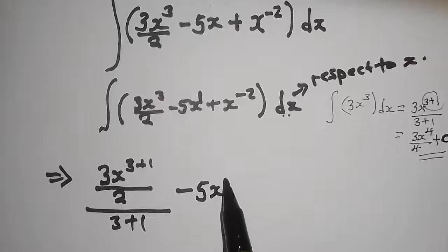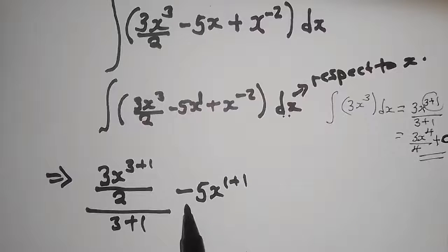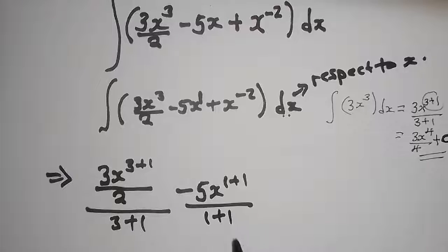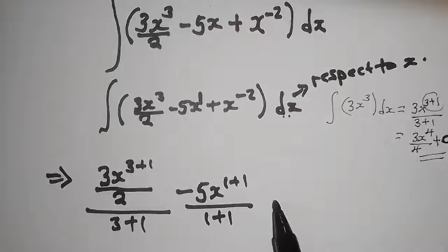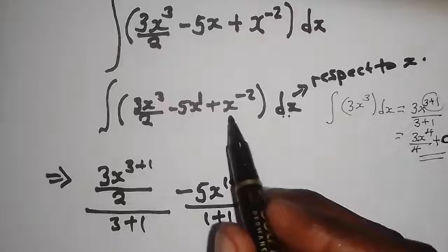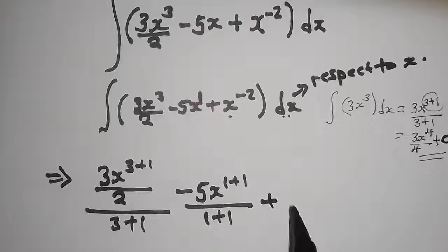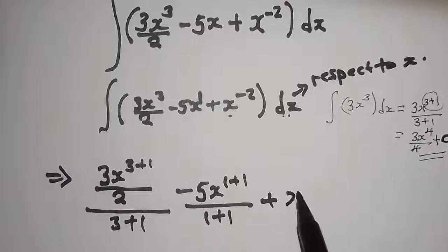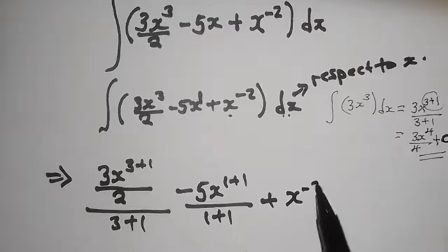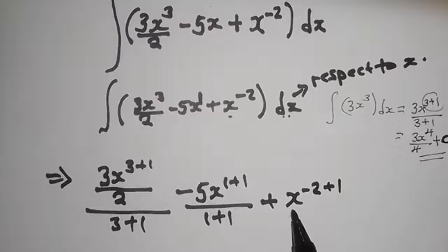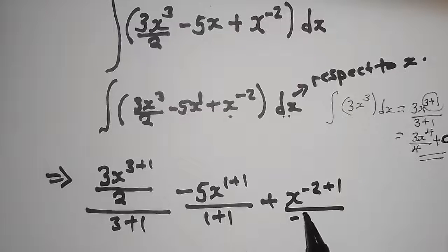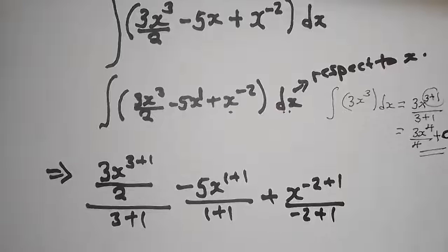For the third term, x to the power negative 2, we apply the same rule: x to the power negative 2 plus 1, divided by negative 2 plus 1.